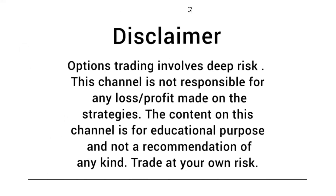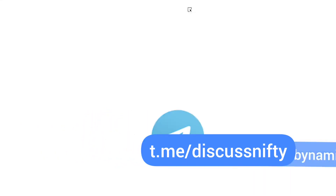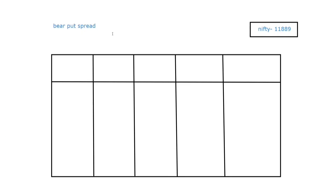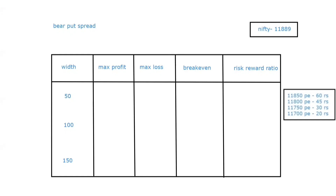Hello everyone, this is Namit. Today we are going to look at the change in width of strikes of debit spreads. We will take a live example where Nifty is at 11,889 — this is the closing of Nifty at 27 October 2020. First we will take an example of a bear put spread. The columns we'll use are: width, maximum profit, maximum loss, break-even, and risk-reward ratio. I have written all the closing prices of the puts we need to calculate.